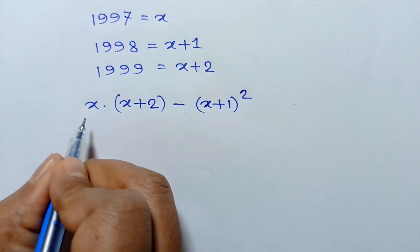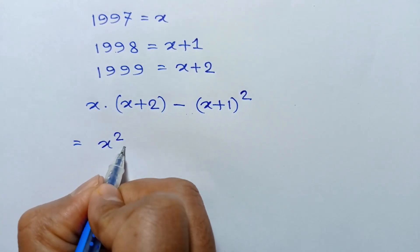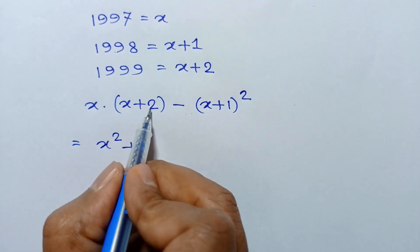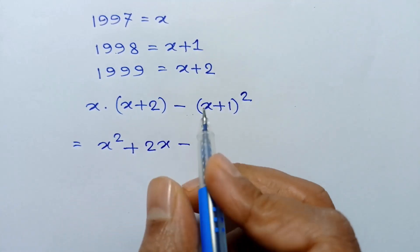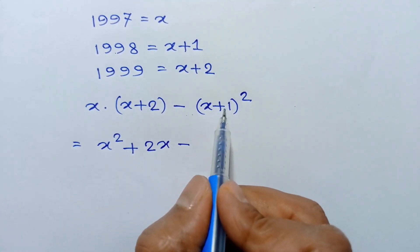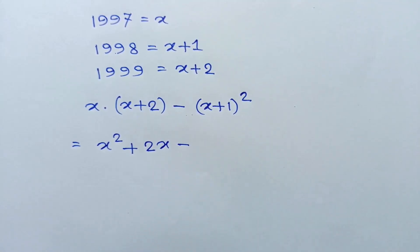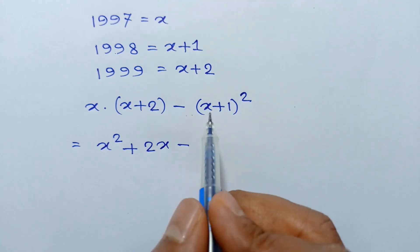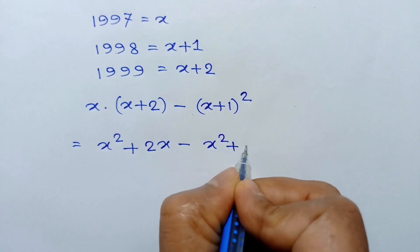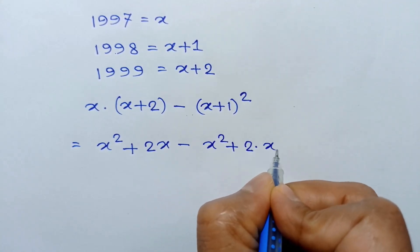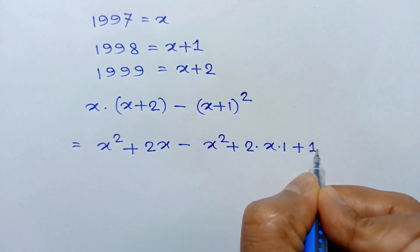This equals x times x plus 2, which expands to x squared plus 2x. Then applying the formula (a plus b) whole squared equals a squared plus 2ab plus b squared, we expand (x plus 1) squared as x squared plus 2 times x times 1 plus 1 squared.